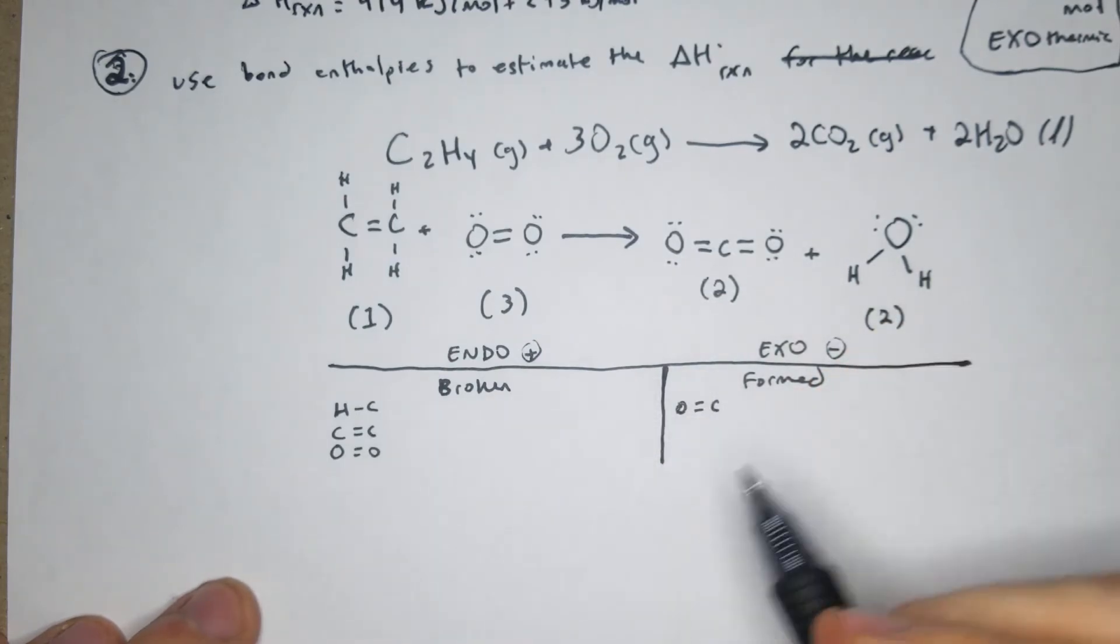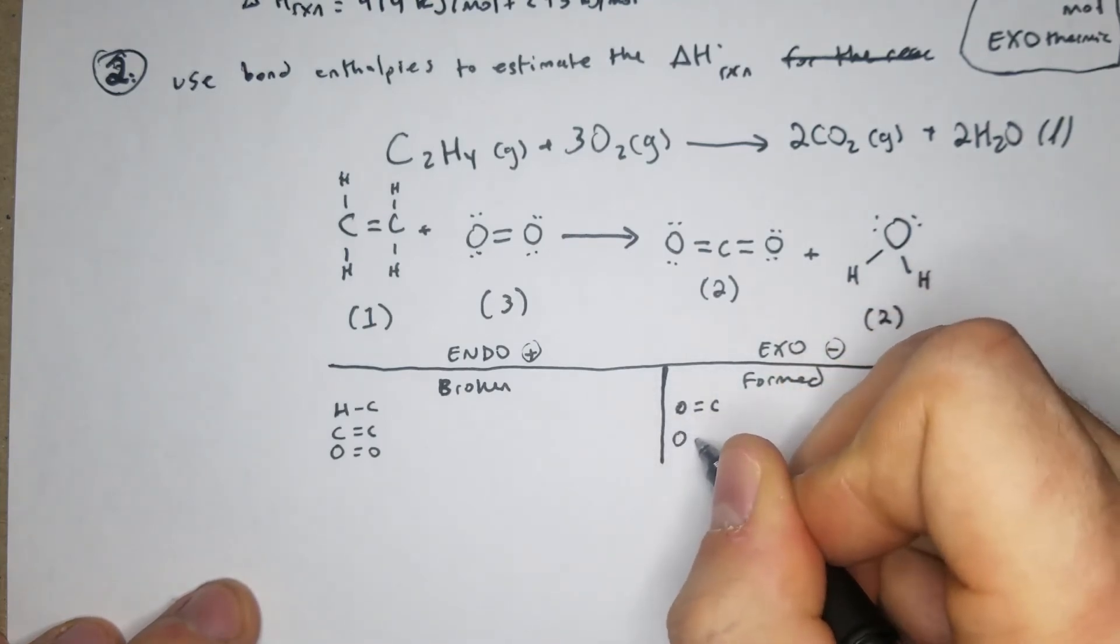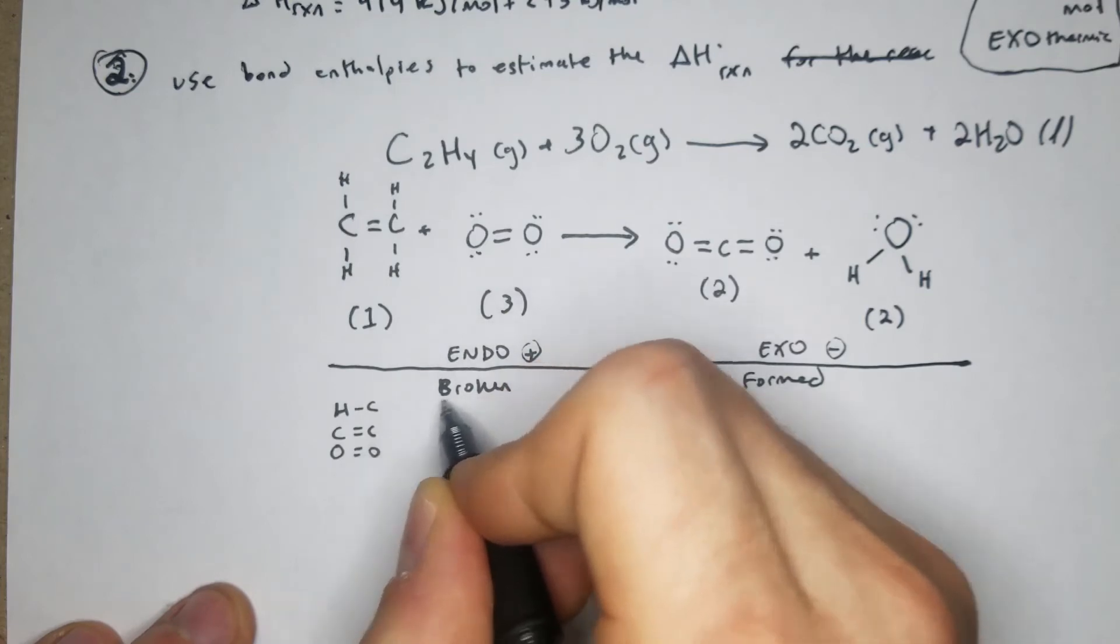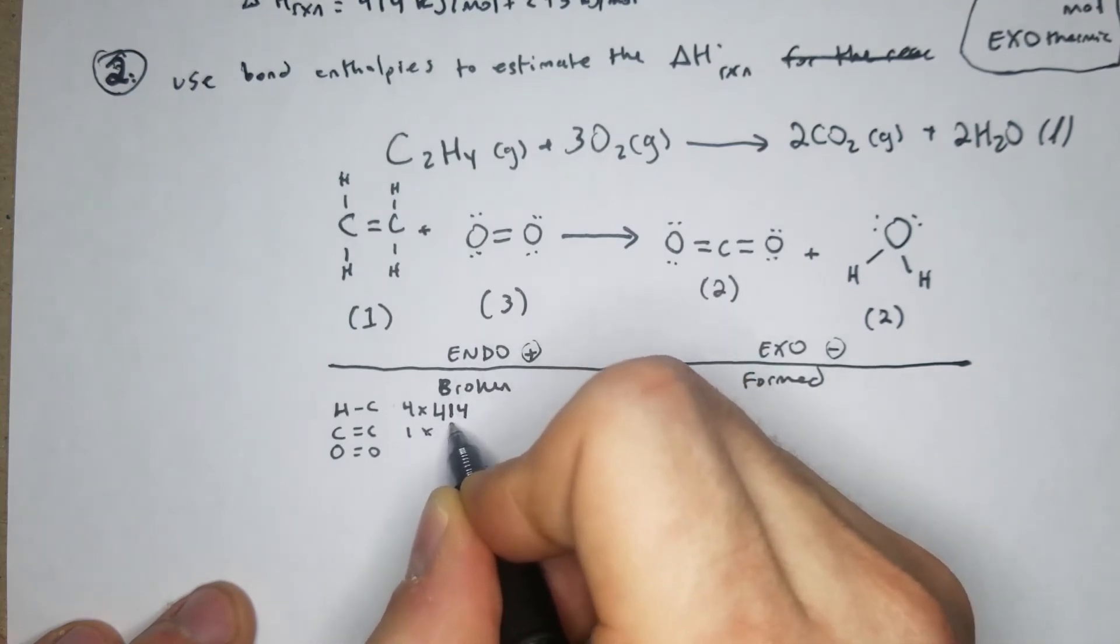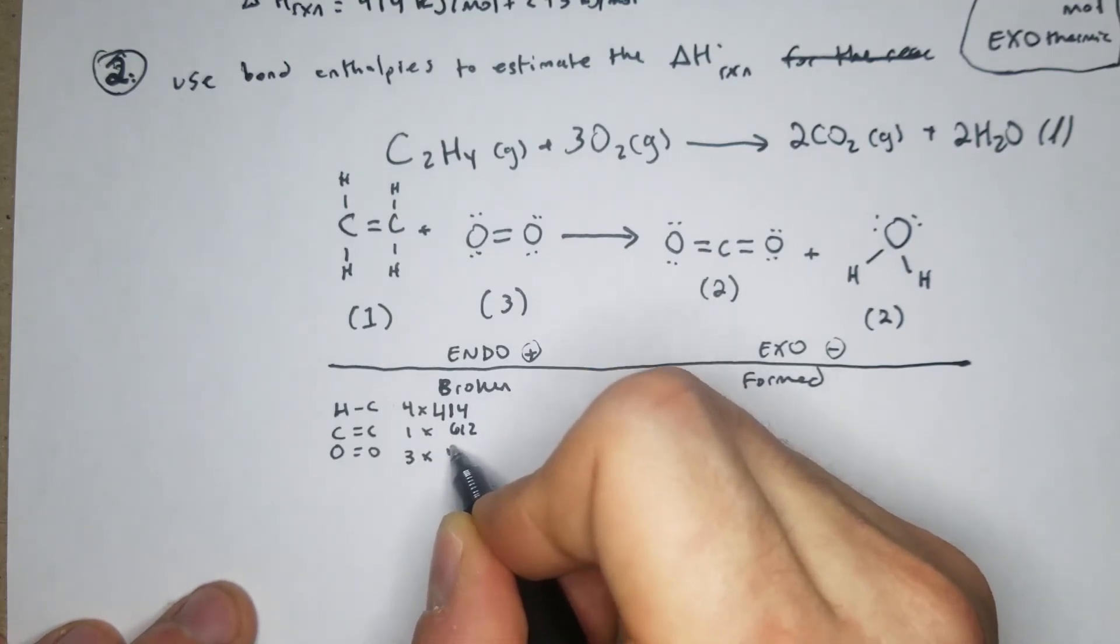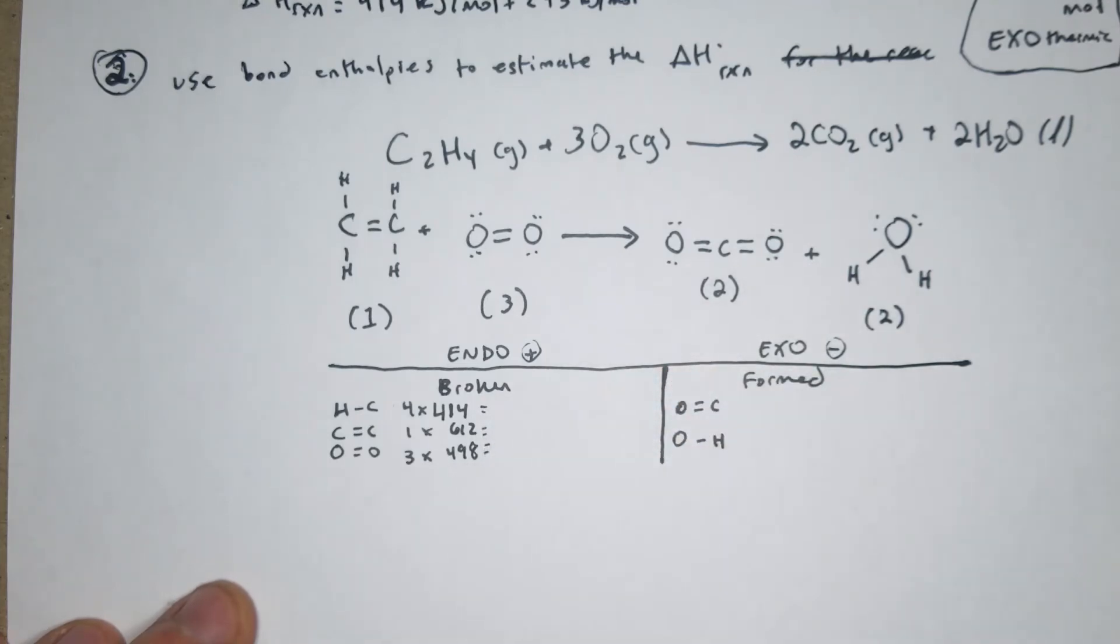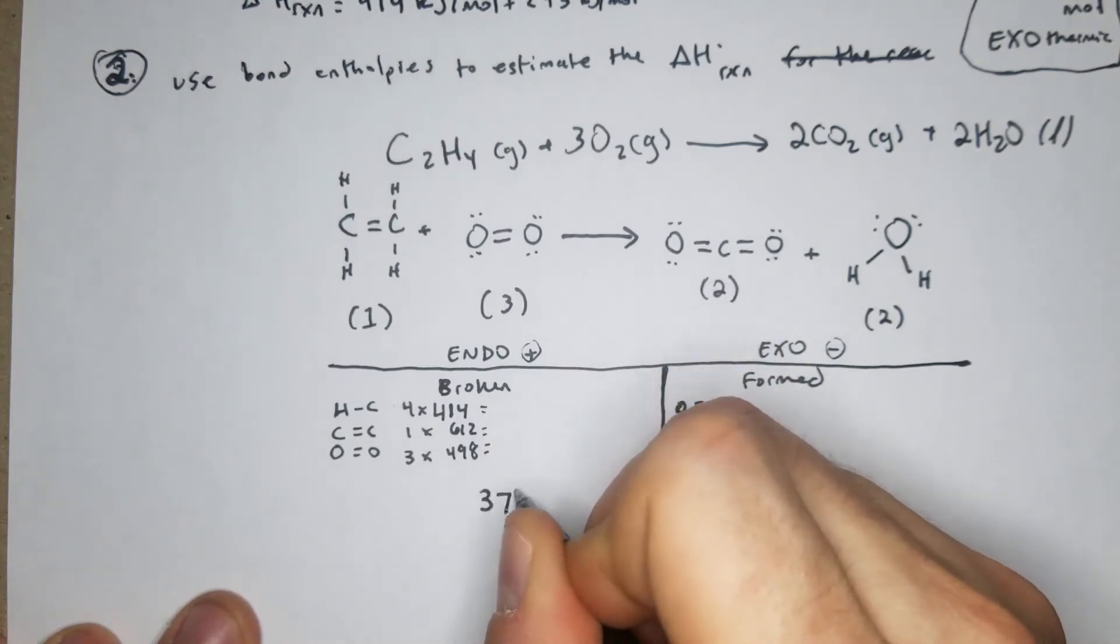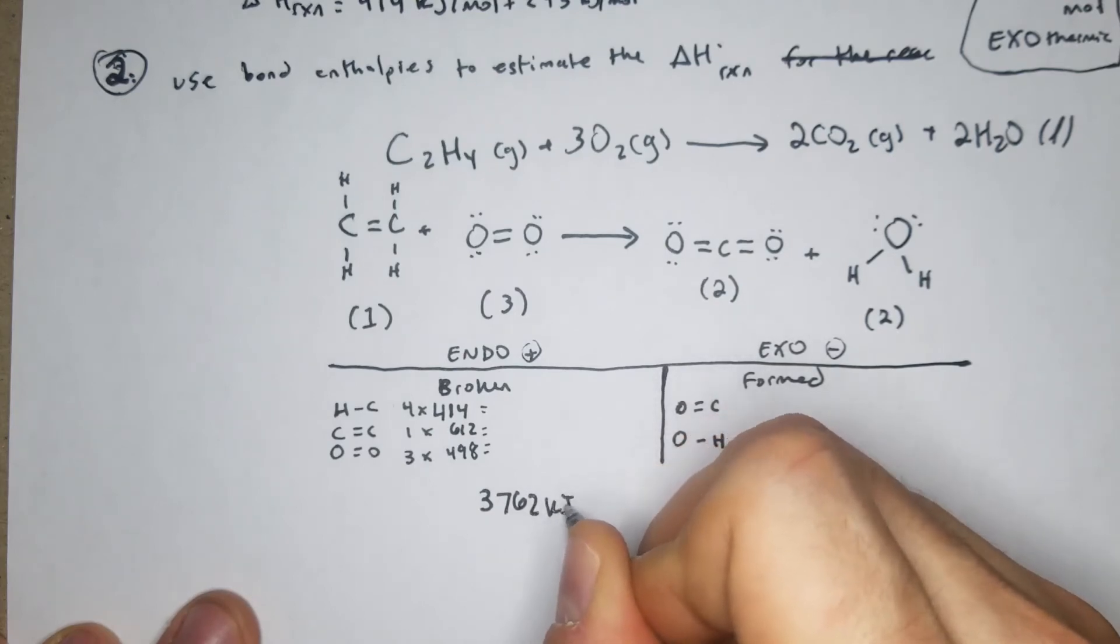We have the H-C, we have the C=C, we have the O=O. And what I like to do is write them out sequentially for each step that way you can compare them. Unfortunately in this case it doesn't look like we have much that we can cancel anything out, so we're just going to have to go into it. This will be 4 times 414, 1 times 612, and 3 times 498, and we're just going to add that all up.